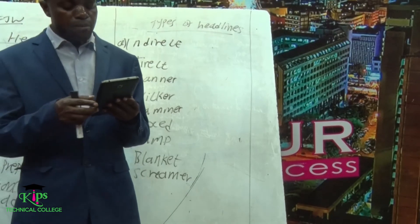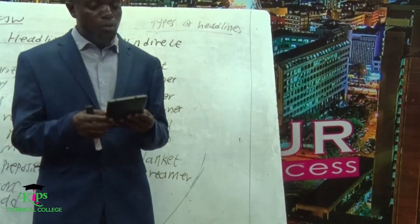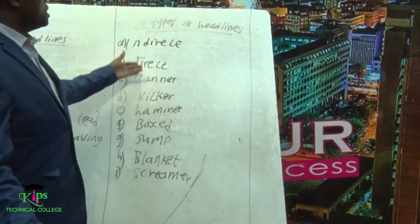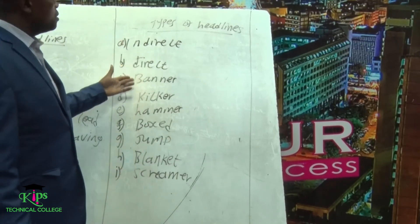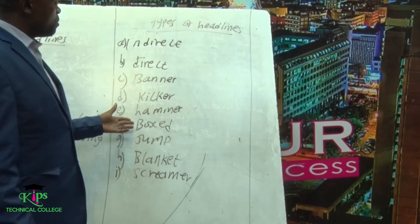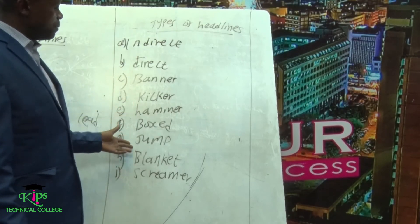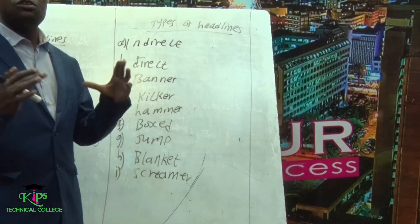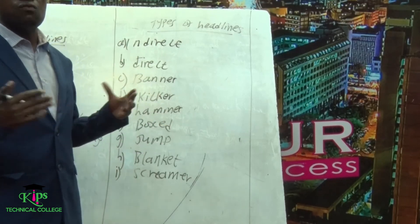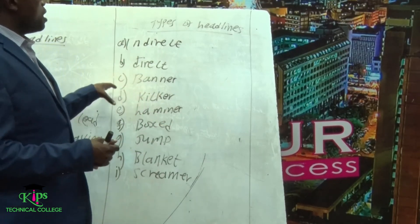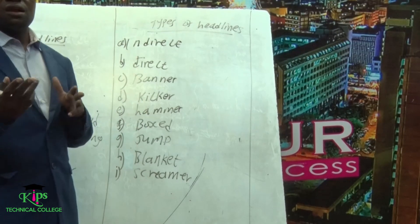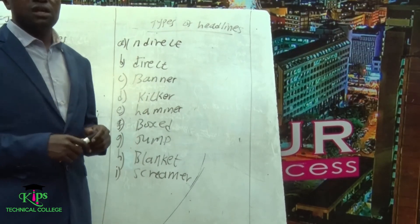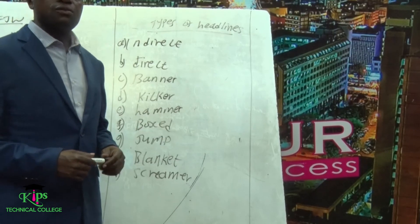I hope you are able to understand. Most of these types of headlines we talked about today: indirect headline, direct headline, banner, kicker, hammer, box, jump, blanket, and screamer. I do hope you are able to understand and contextualize the meaning of all these types of headlines and apply them in real life situations. Thank you for your time. Let's meet next time at the same place. Thank you.